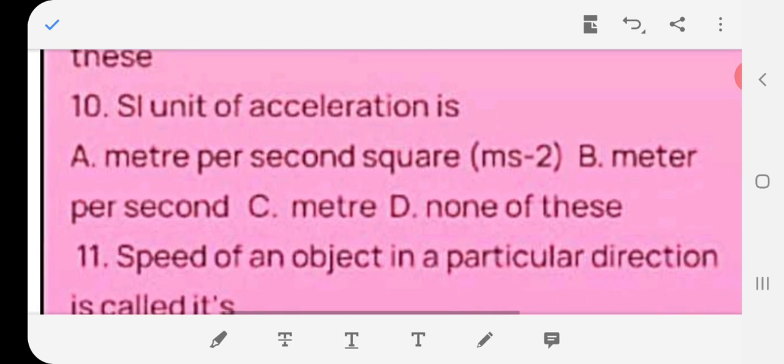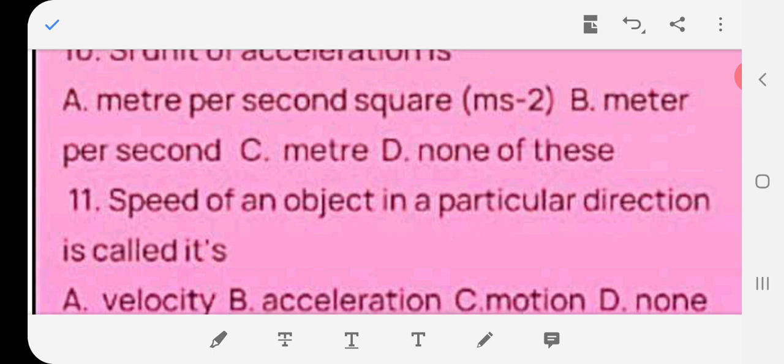SI unit of acceleration is A meter per second square, B meter per second, C meter, D none of these. The correct answer is A meter per second square.